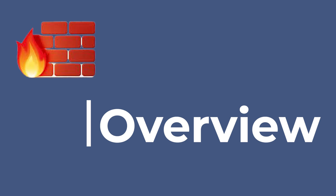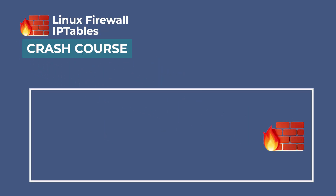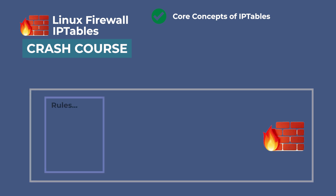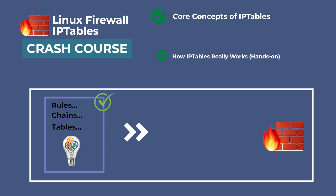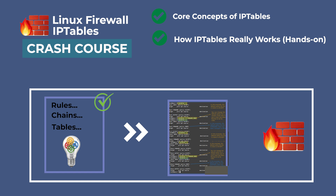So in this crash course, you will first learn the basics of Linux firewall and understand the core concepts and the framework of Netfilter like rules, chains, and tables. Then we will dive into the Netfilter packet flow. I will also show you a brief demonstration of IPtables on an Ubuntu host machine. Finally, it's cumbersome to keep typing IPtables commands on the CLI, so you can automate this process by creating a shell script. We will run a shell script instead of individual commands. So we have a lot to cover here — let's get started.